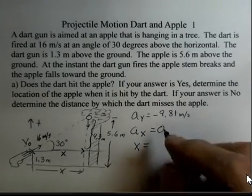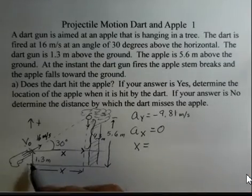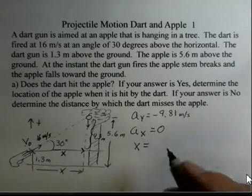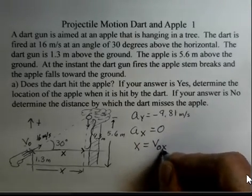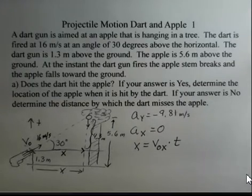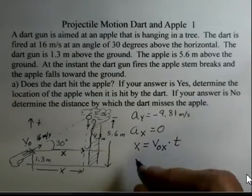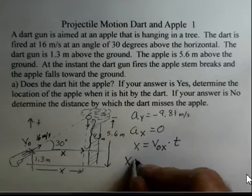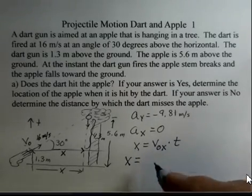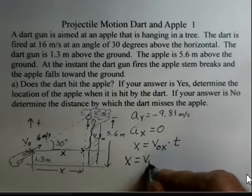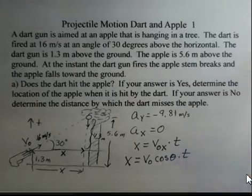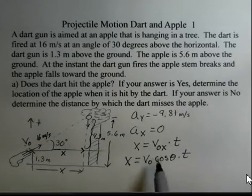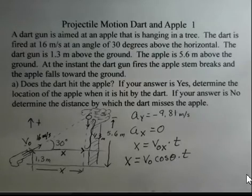And in the X direction, the X position of the dart is going to start at X equals 0 back at the gun. And the X position is given by the original velocity in the X direction multiplied by the time that the dart is moving. So we can expand this: the motion in the X direction equals the launch velocity times cosine of theta times time. We have numbers for the initial velocity and the theta, but I'm not going to put them in just yet.